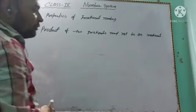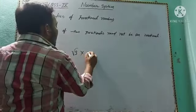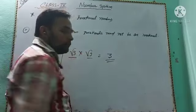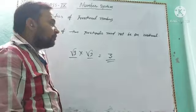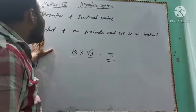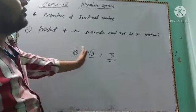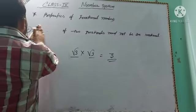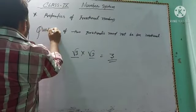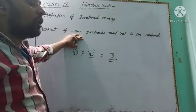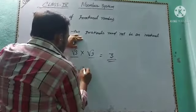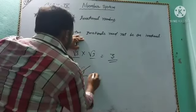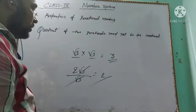Third property: the product of two irrational numbers need not be irrational. For example, √3 × √3 = 3, which is rational. Fourth property: the quotient of two irrational numbers need not be irrational. For example, 2√3 ÷ √3 = 2, since √3 cancels, giving the rational number 2.